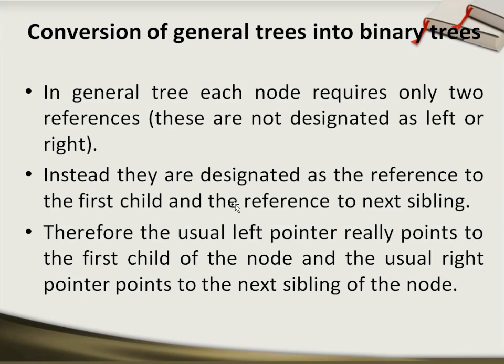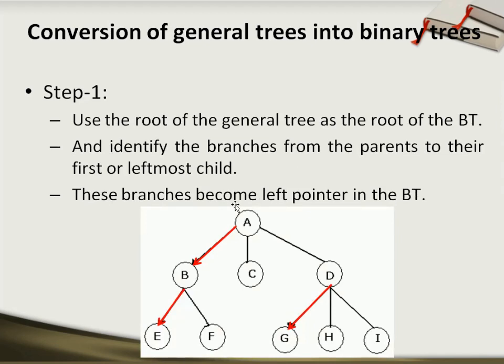With the help of this, we can convert the given general tree into a binary tree by rearranging these links. So let's discover how to convert a general tree into a binary tree. For step one, this is an example of a general tree: A, B, C, D are subtrees of A; E and F are subtrees of B; G, H, and I are subtrees of D.